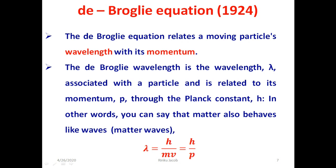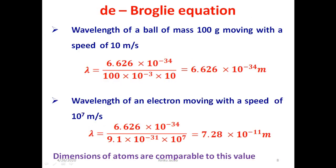The wave-particle duality is the concept in quantum mechanics that every particle may be described as either a particle or a wave. For a comparison of the size of the matter wave for large objects and subatomic particles, we first calculate the wavelength of a ball of mass 100 grams moving with a speed of 10 meters per second. Using the de Broglie wavelength equation lambda equal to h by mv, we get 6.66 × 10⁻³⁴ meters as the wavelength of the matter wave associated with the ball.